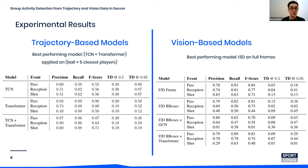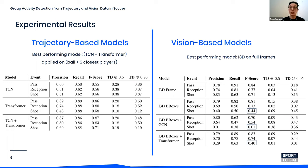For the vision-based models, surprisingly, we achieved the best performance when the I3D was applied to the full frame data. We suspect the full frame performed best because the entire scene provides sufficient context useful for group activity recognition. In particular, all bounding box models performed poorly at recognizing a shot, because an important feature of a shot sequence is the net, which cannot be sufficiently captured with player tubelets.